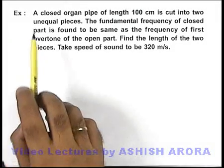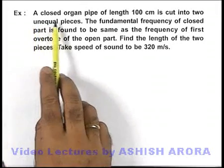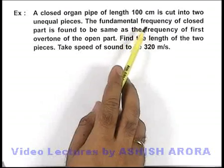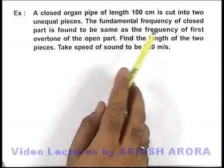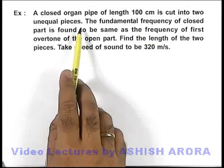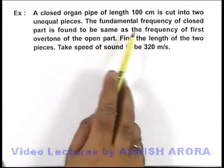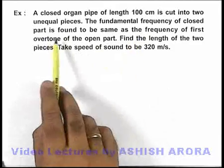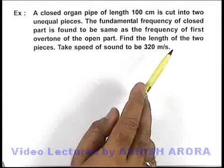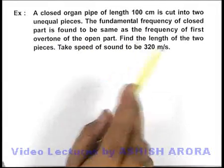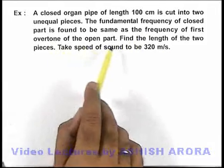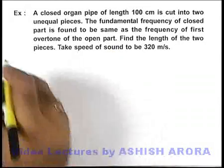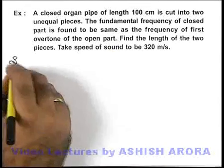In this example, we are given that a closed organ pipe of length 100 centimeters is cut into two unequal pieces. The fundamental frequency of the closed part is found to be the same as the frequency of the first overtone of the open part. We are required to find the length of the two pieces.